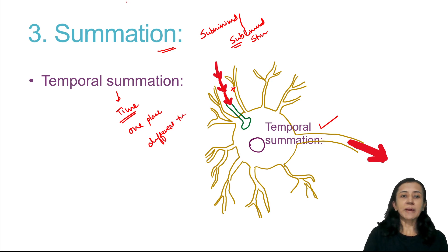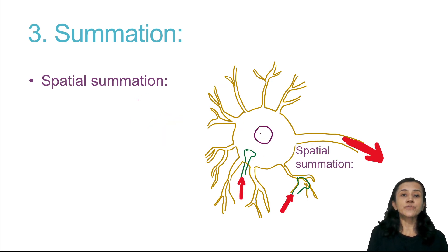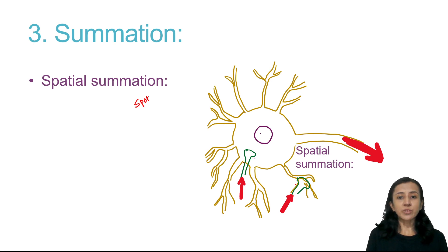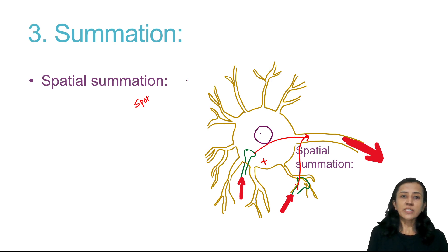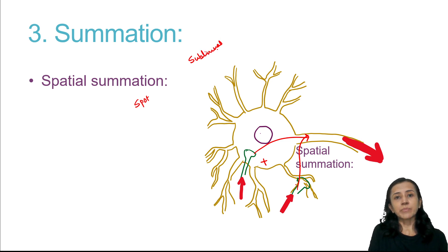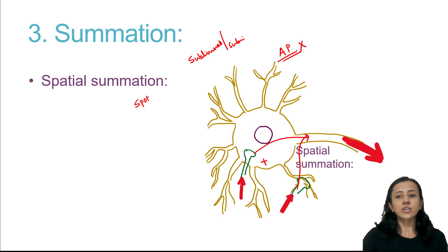Spatial summation is summation of spots — two spots at a time. When two presynaptic terminals are stimulated at the same time, this activity is summated to produce a response. An important point: summation requires subliminal or subminimal stimulus, because if the stimulus is threshold or minimal, there is an action potential, and action potentials cannot be summated.